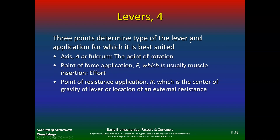Three points determine the type of lever and the application for which it is best suited. A is the axis or fulcrum — the point of rotation. F is the point of force application, which is usually where the muscle inserts. R is the point of resistance application, which is the center of gravity of the lever or the location of an external resistance.